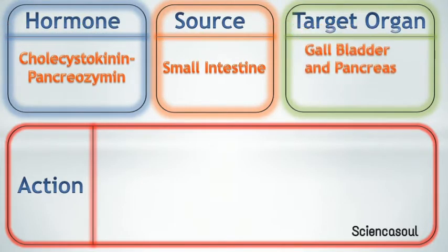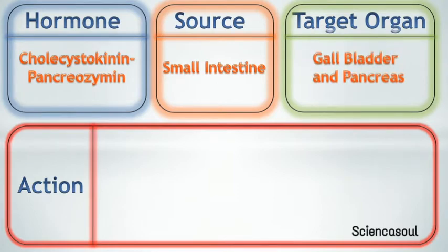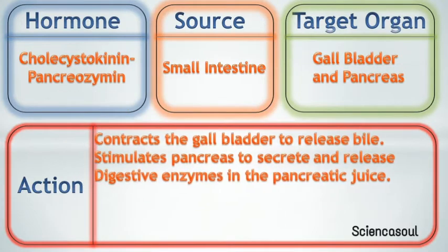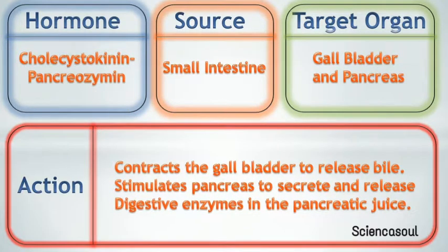Fourth hormone is cholecystokinin-pancreosymin. Source of this hormone is the small intestine. Target organ of this hormone is the gallbladder and pancreas. Action of this hormone is to contract the gallbladder to release bile, and stimulate the pancreas to secrete and release digestive enzymes in the pancreatic juice.